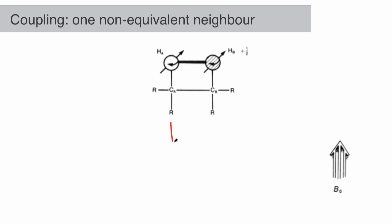If there's one non-equivalent neighbor, that proton neighbor might have spin +1/2, which results in a magnetic moment aligned with the spectrometer's magnetic field. The overall magnetic field experienced by the proton increases, so the proton's chemical shift will move to a higher frequency.